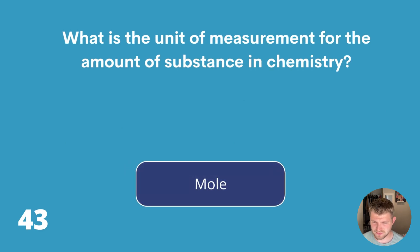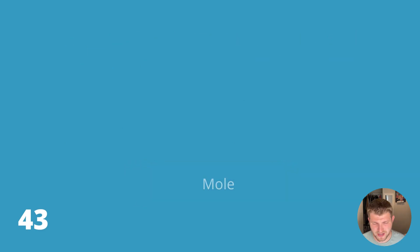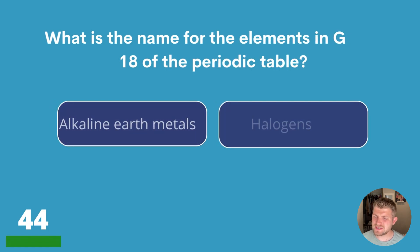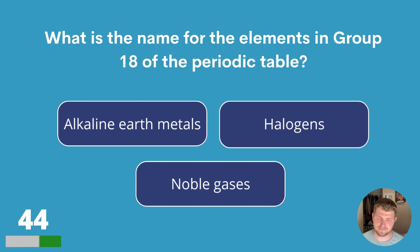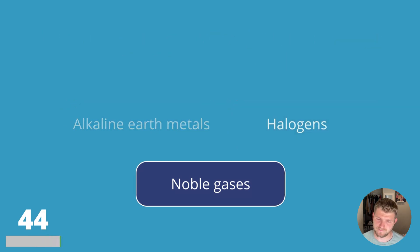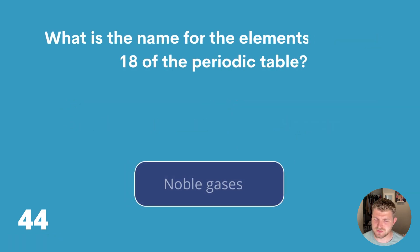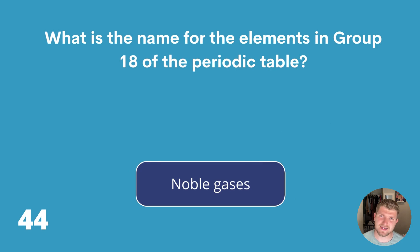Well then, if you've got that one, we're on to question forty-four. What is the name for the elements in group eighteen of the periodic table? Alkaline earth metals, halogens or noble gases? The answer is noble gases.